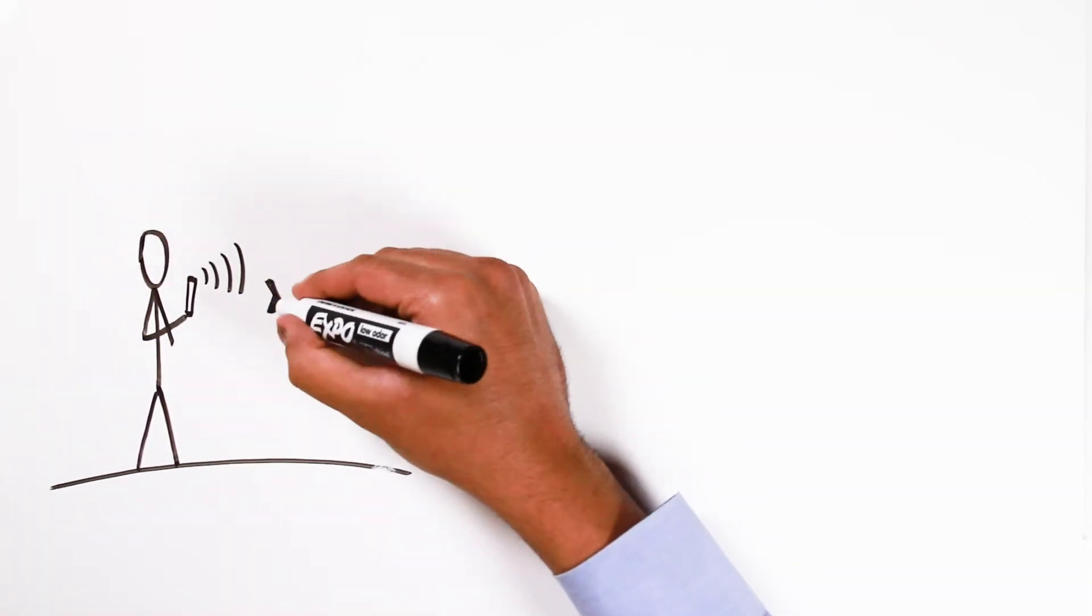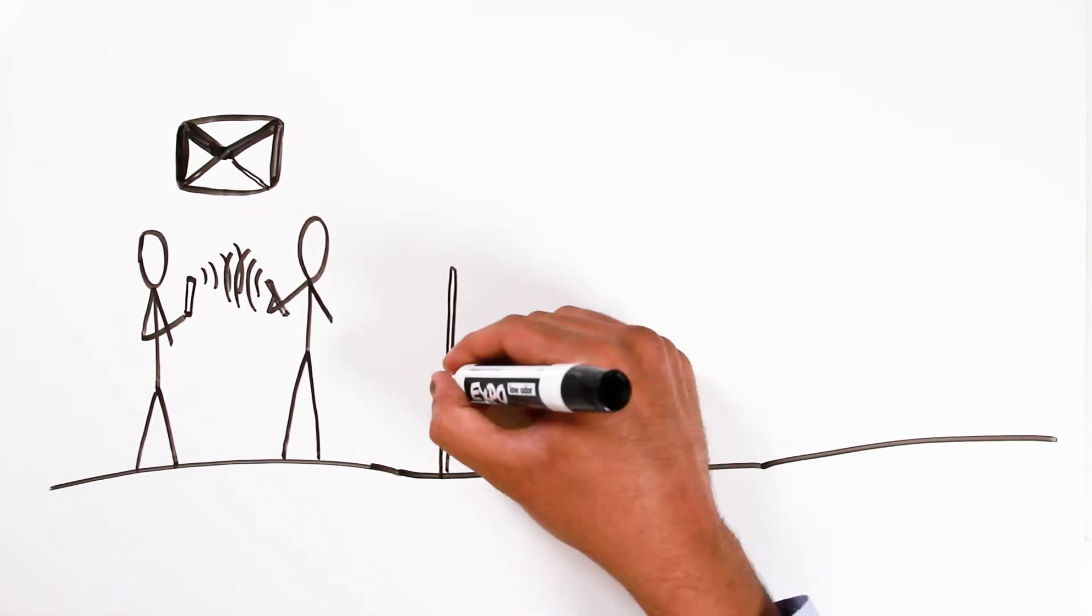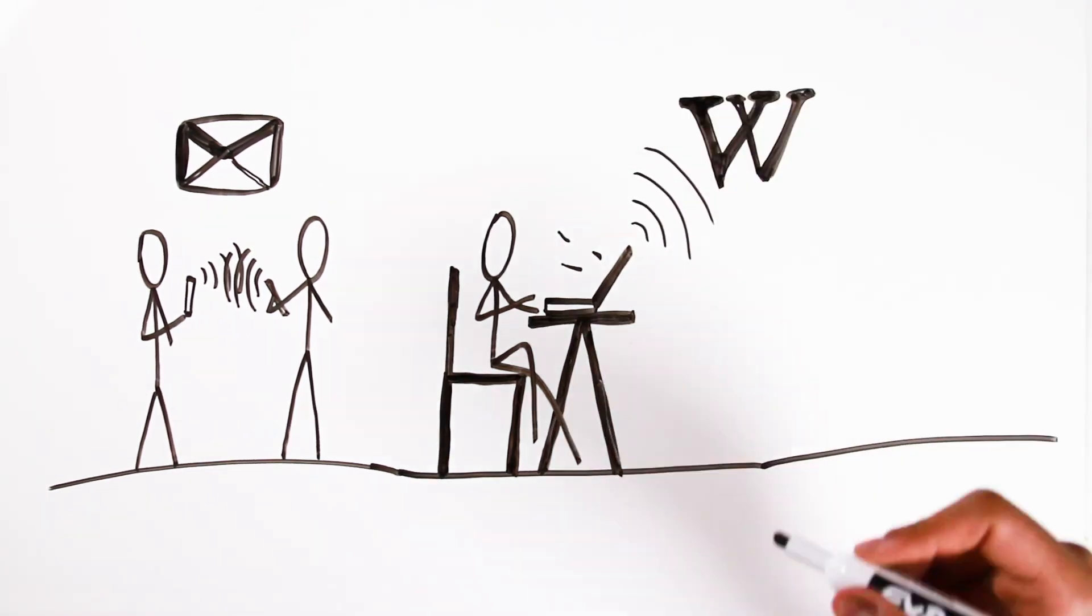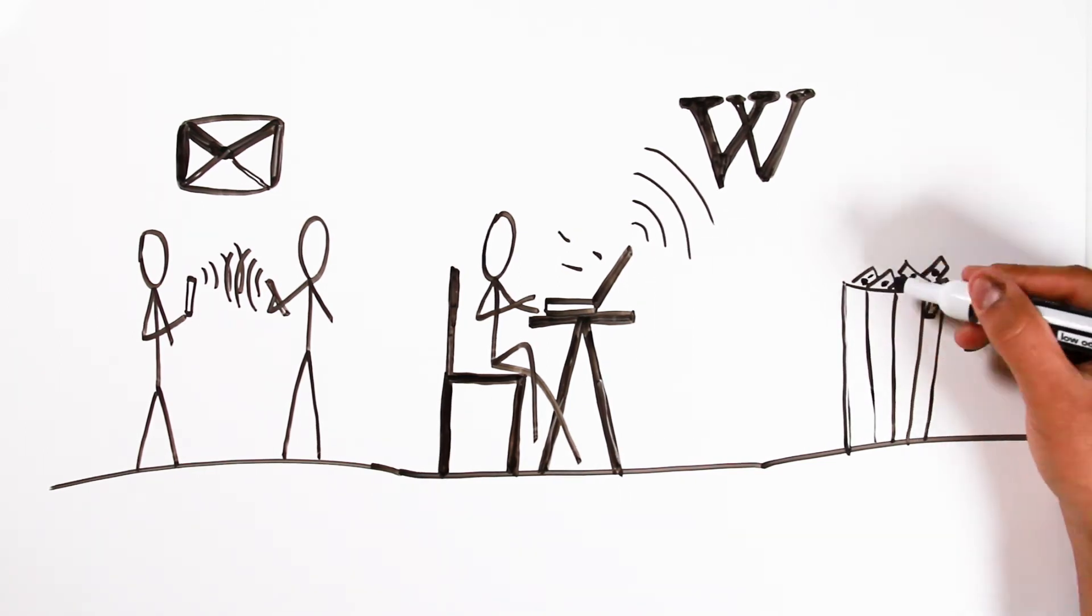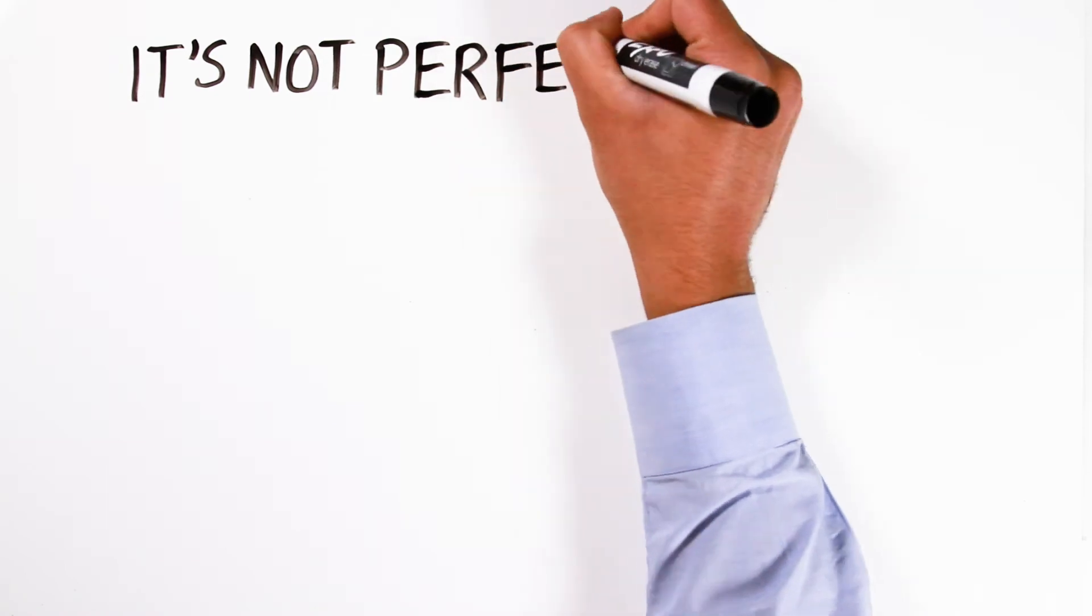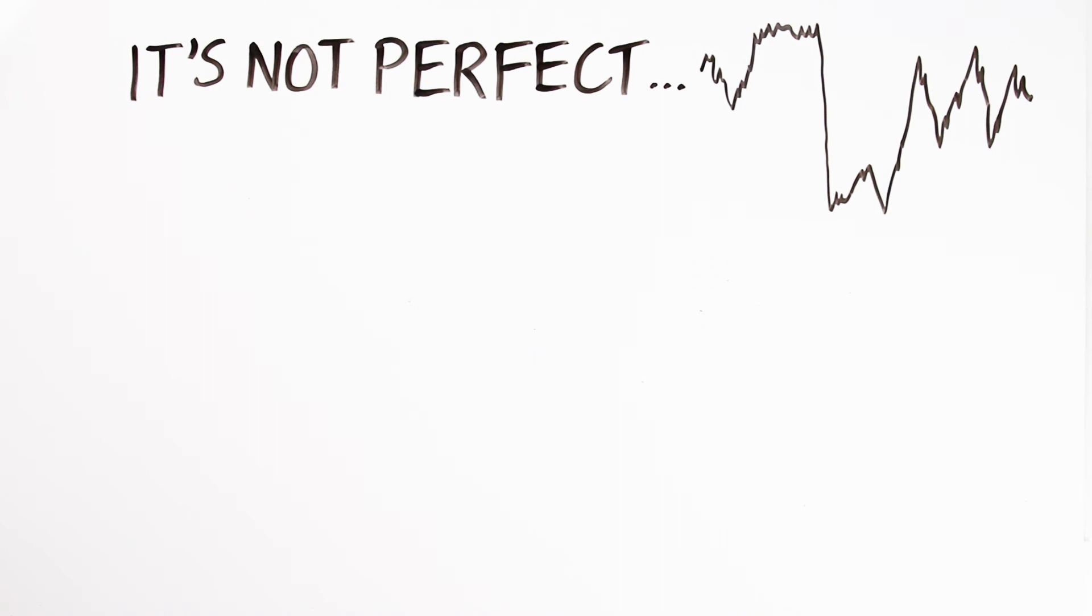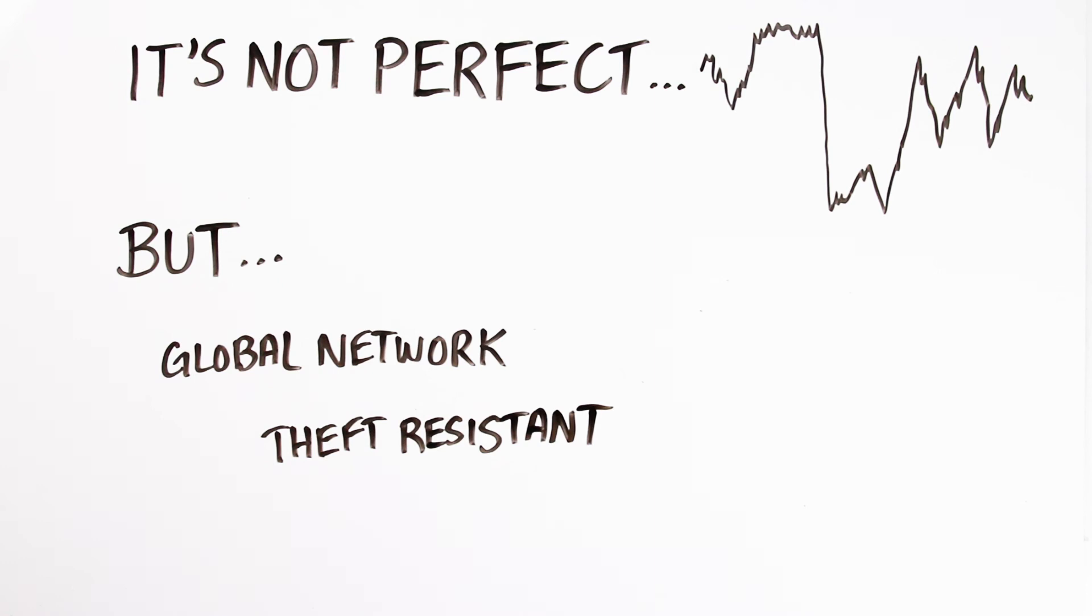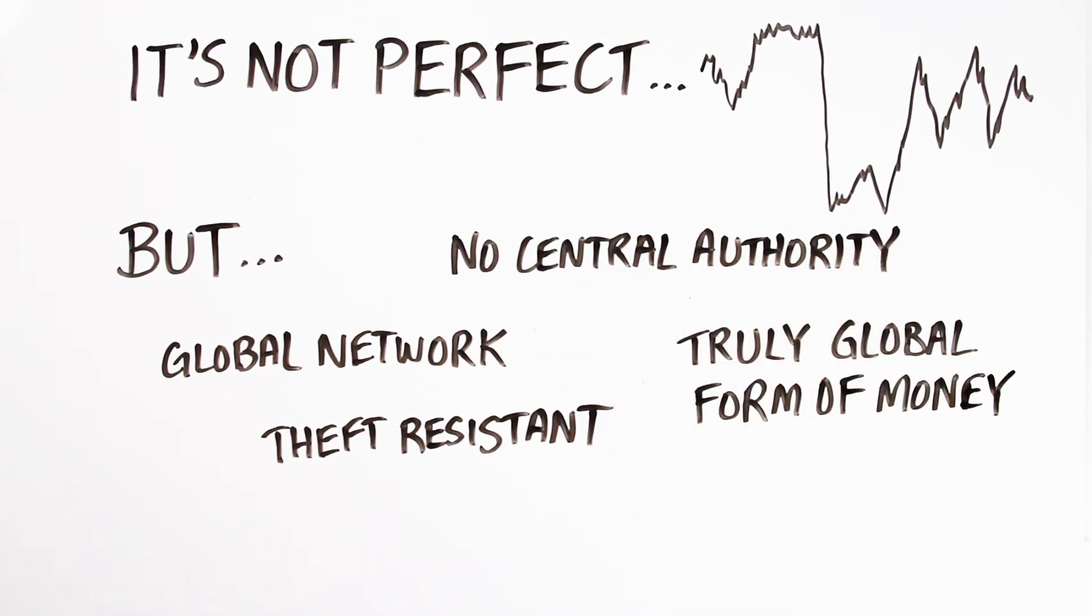So just like internet mail replaced traditional snail mail and opened up a world of possibilities, and internet encyclopedias replaced traditional encyclopedias and opened up the entire world to information, we think internet money is going to replace the traditional old financial system. It's not perfect. It's still in its infancy. The price has been volatile. But what we would say to those investors on that Wheaties box of great investors, they are a member of the financial elite. So the financial system already works for them. But this new form, a more ideal form of global money, will open up the financial system to everyone else. It is a global network. It is theft resistant, censorship resistant, not dependent on a single political authority. And it is a truly global form of money. If you are creating the financial system from scratch today, this is how you would create the ideal form of money.